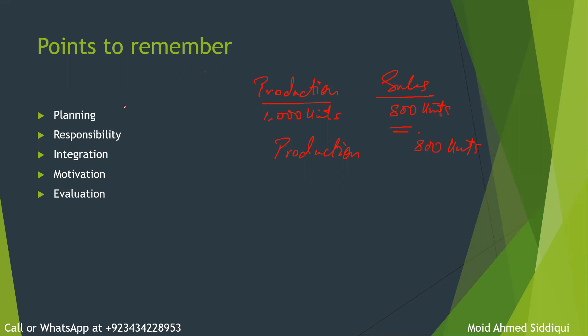So, these are the five points. Number one, P for planning, R for responsibility, I for integration, M for motivation, and E for evaluation. I suggest that whenever studying a budgeting chapter.